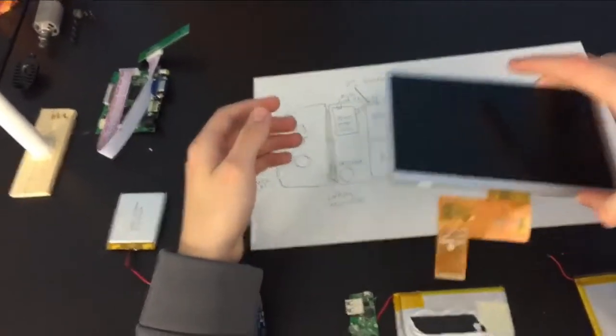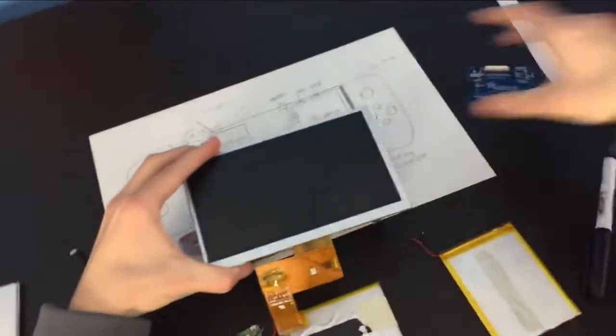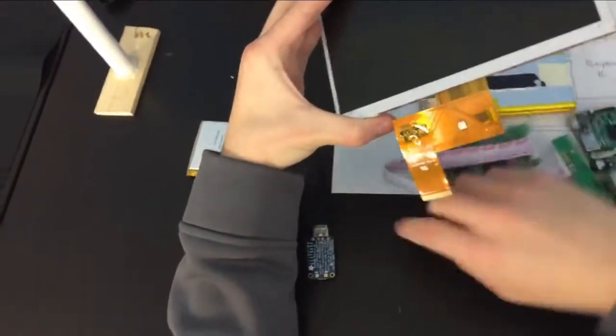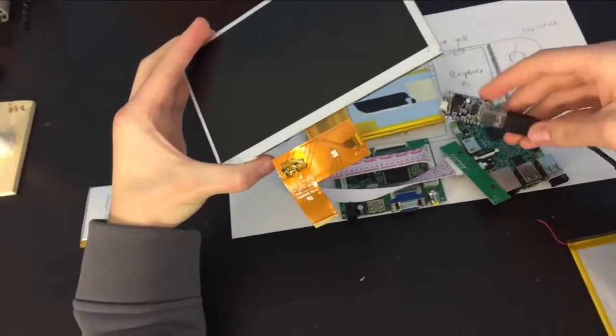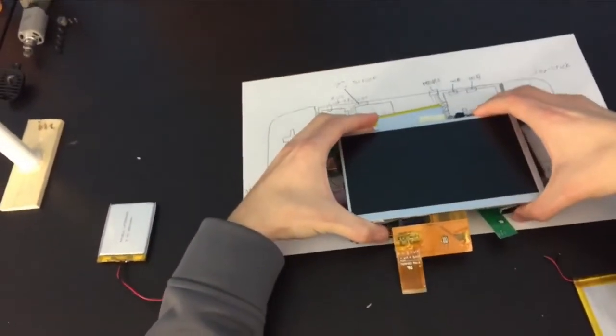Of course underneath the screen is going to be the controller board, the Raspberry Pi, the battery, and the PowerBoost 1000C. So it's going to be like that underneath.